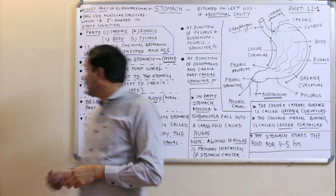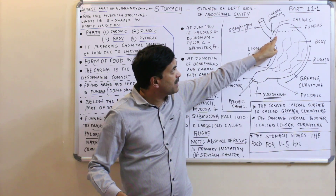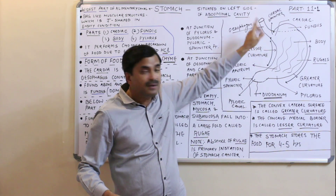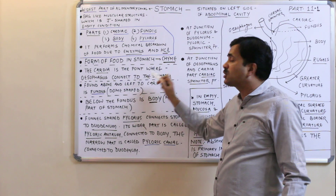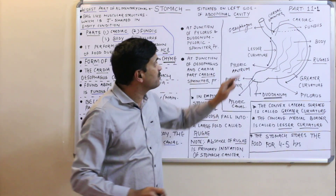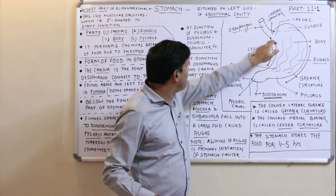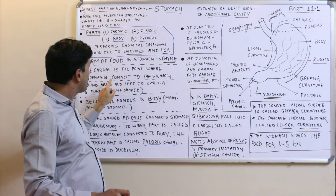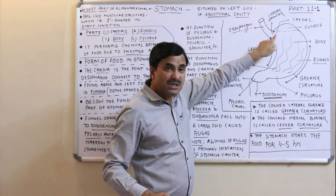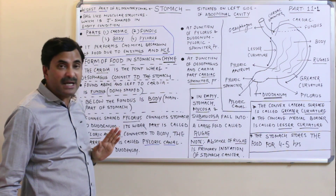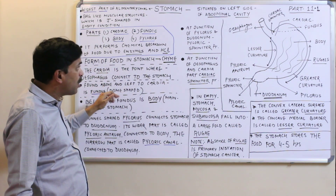The cardia is the first part of the stomach. It is the point where the esophagus connects to the stomach. This is clearly visible in the diagram — the esophagus is connecting to the stomach at the cardiac part.